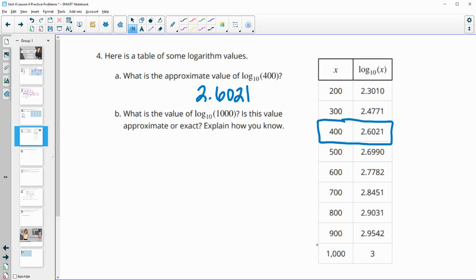What is the value of log base 10 of 1,000? So if we go down here, we see that log base 10 of 1,000 is 3, which makes sense since the logarithm is telling us what power of 10 would give us 1,000, and we know 10 to the third equals 1,000.